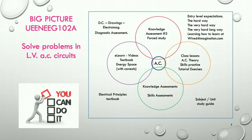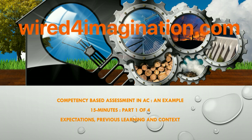We look at the hard way to do AC, the very hard way to do it, and the very hard long way — some of my students have to do this three times. We also look at some learning how to learn, amplified on my personal website at wiredforimagination.com. Then we'll be looking at setting the context, and the context I use is Electrical Principles by Phillips Textbook. This is part one of four: expectations, previous learning, and context.